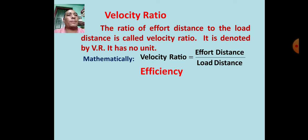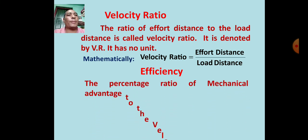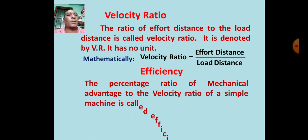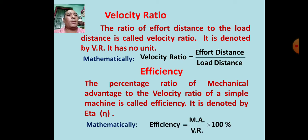The percentage ratio of mechanical advantage to the velocity ratio of a simple machine is called efficiency. It is denoted by eta. Mathematically, efficiency equals MA upon VR into 100 percentage.